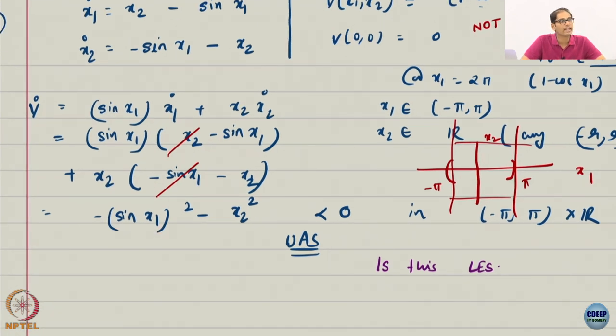Where can this guy be 0? At x1 equal to n pi. So the only possible candidate within this set is 0 itself. Because minus pi and pi are not in the set. So this guy is exactly 0 only when x1 and x2 are exactly 0, not 0 anywhere else. So I really hope you are able to capture these subtle points here. Very subtle but very key.